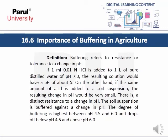Importance of buffering in agriculture: Buffering refers to resistance or tolerance to a change in pH. For example, if 1 mL of 0.01 normal HCl is added to 1 liter of pure distilled water at pH 7, the resulting solution would have a pH of about 5. On the other hand, if the same amount of acid is added to a soil suspension, the resulting change in pH would be very small — there is a distinct resistance to change, meaning the soil suspension is buffered against pH change.